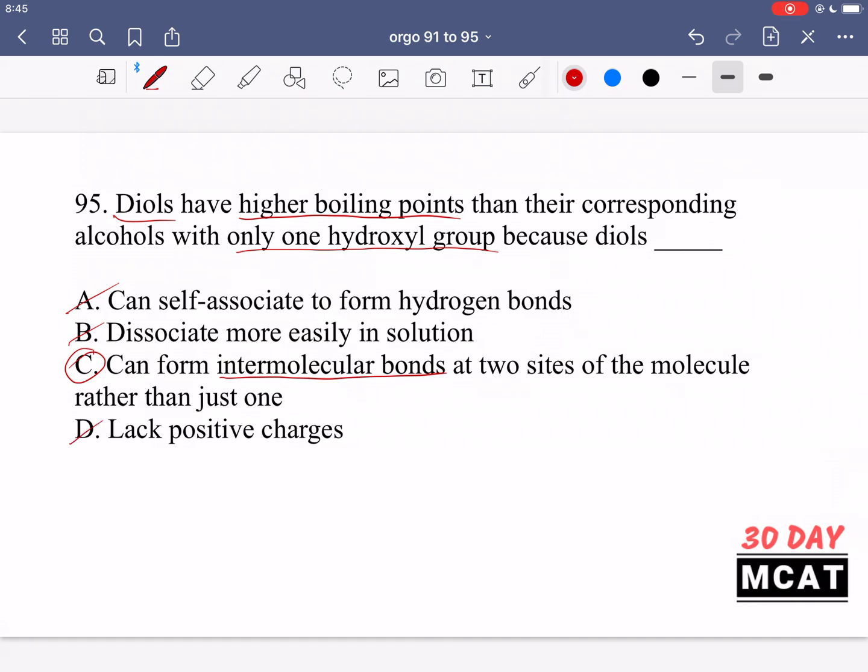Finally, D says they lack a positive charge. That's incorrect. Sure, they do lack a positive charge, but so does the single hydroxyl alcohol. That's not really what we're talking about here. Whether it has a charge or not, it can still have dipoles happening - partly charged delta charges. That can still lead to intermolecular attractions and differences in boiling point. C is the best answer here.